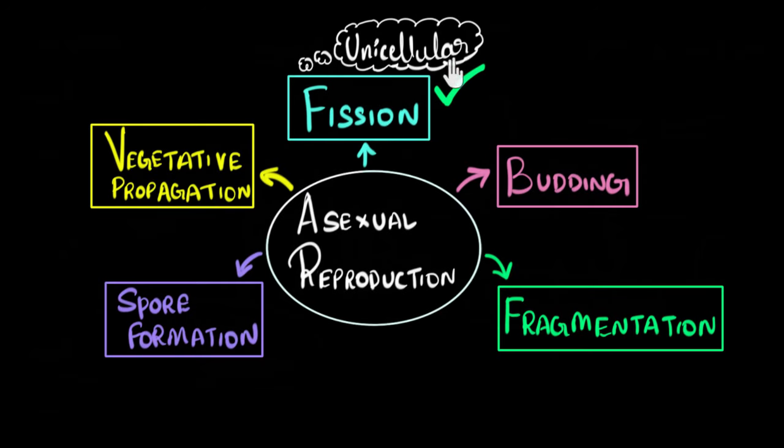When a unicellular organism undergoes cell division or basically fission, we get more cells and as a result, we get brand new individual unicellular organisms. And therefore, this is a method of reproduction for them.